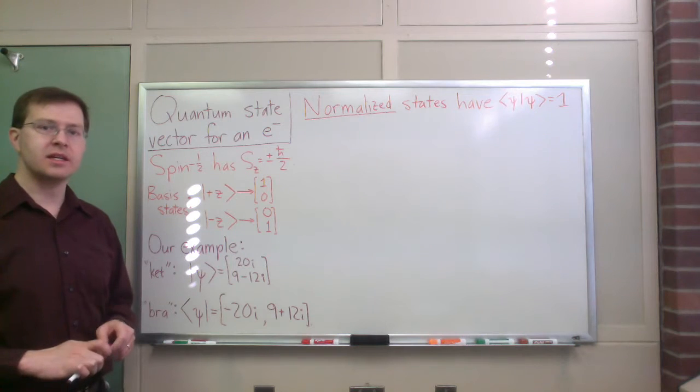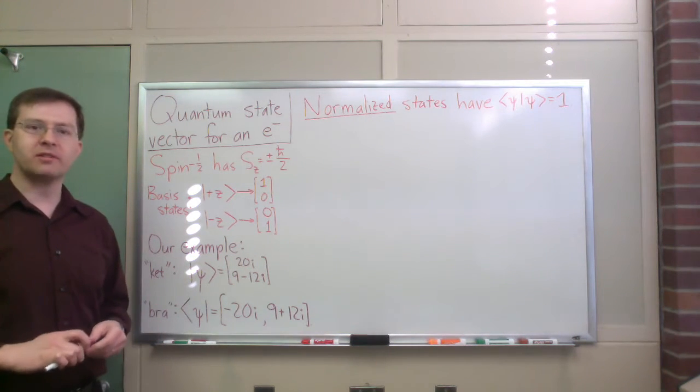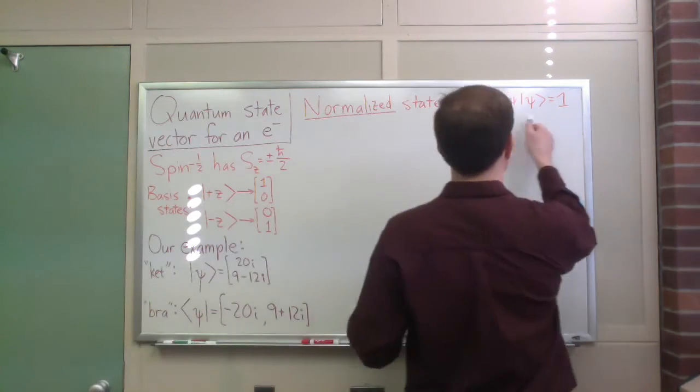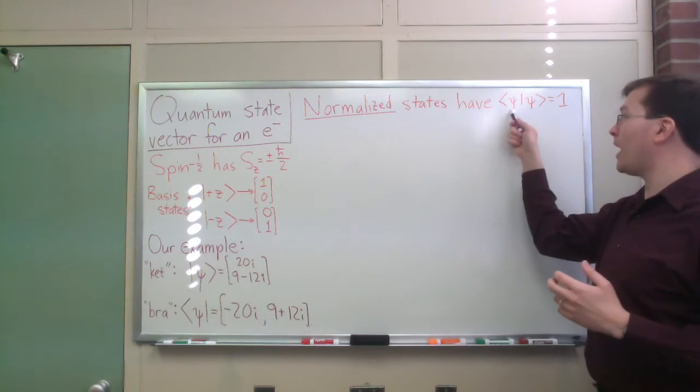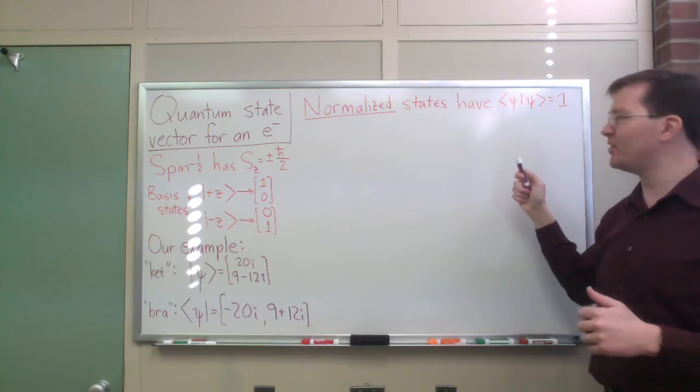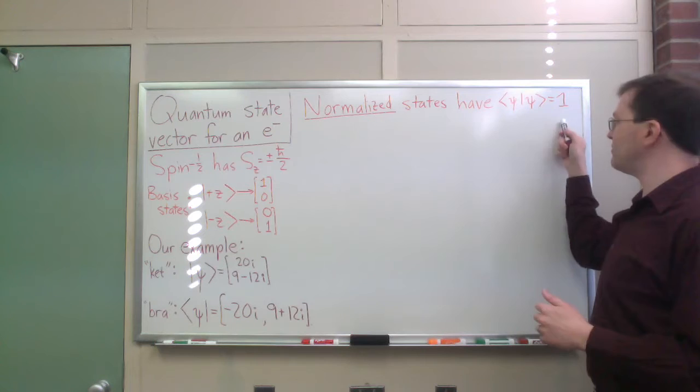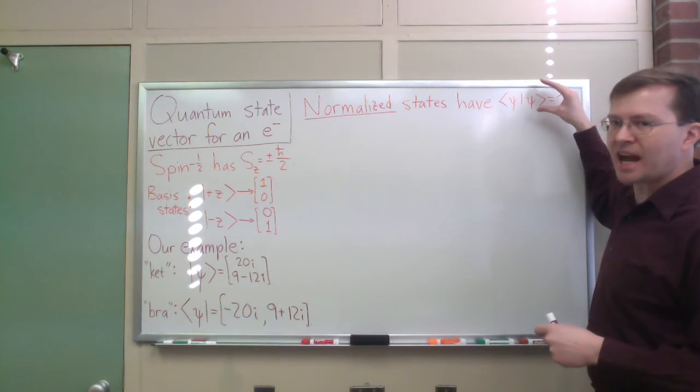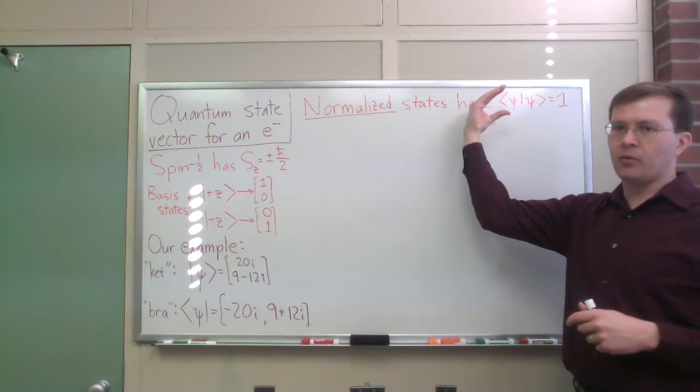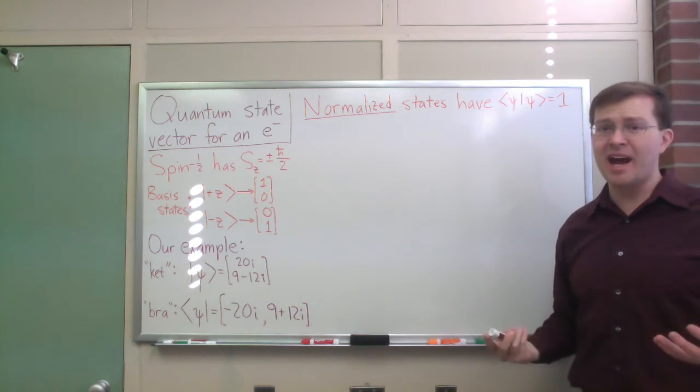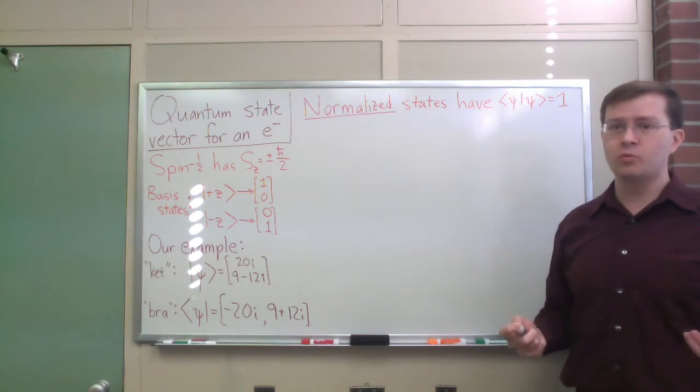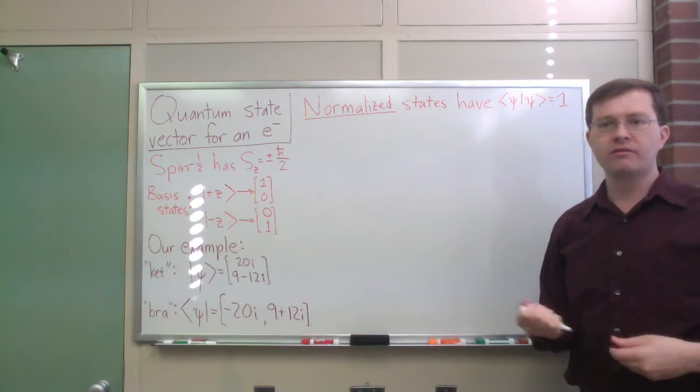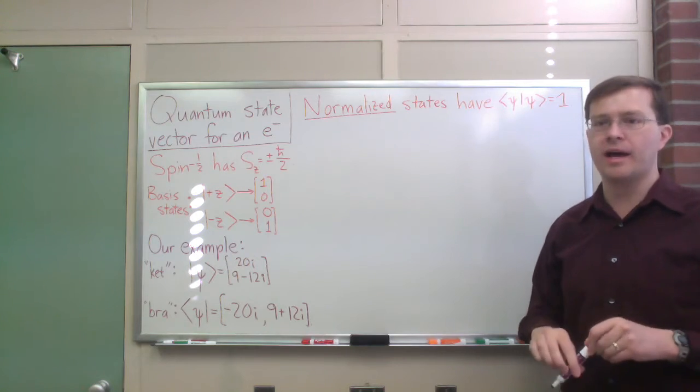The reason we talk about both of these is that a properly normalized quantum state has to have this property that it combines together to equal one. When I take the bracket, bra times ket, bracket, a cute name. When I take the bracket of a state with itself, it has to give me one. That's a basic rule of quantum mechanics. Essentially, it's because that's asking a question: If I start in state psi, what's the probability that I will measure it to be in state psi? Well, if I'm in state psi, I'd better be guaranteed to measure state psi. So, that means the probability is one. This is our normalization condition. So, is my state vector psi normalized? Let's look at it.